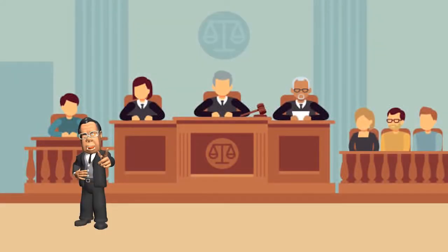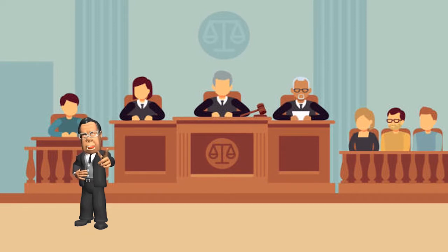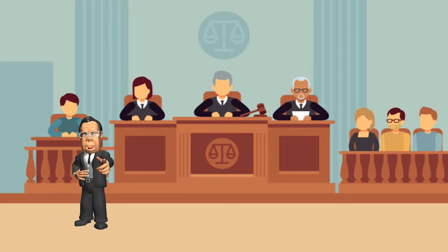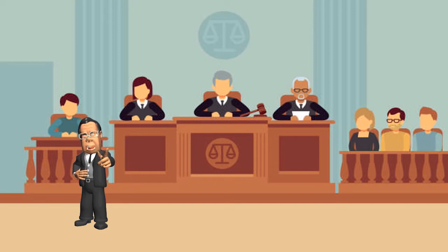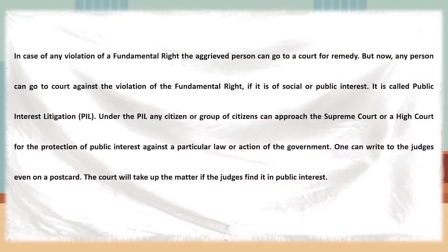A person whose rights are violated can go to court for justice. This is called Public Interest Litigation, or PIL. Under this, a citizen has the right to approach the Supreme Court or High Court for the protection of their public interest against some law of the government. The judge takes up the matter only if it is of public interest.